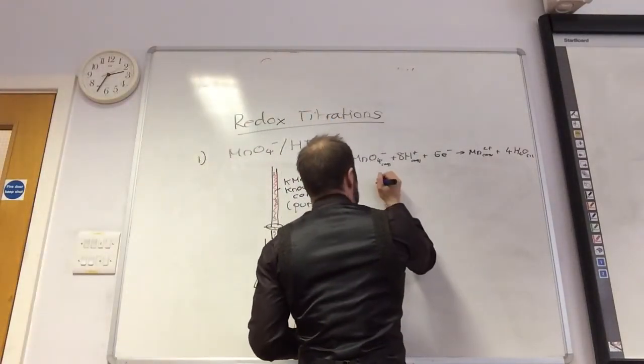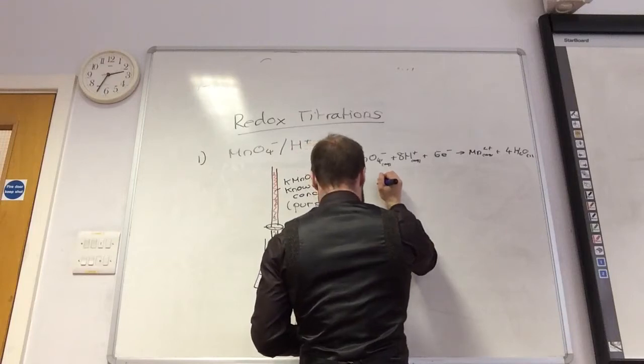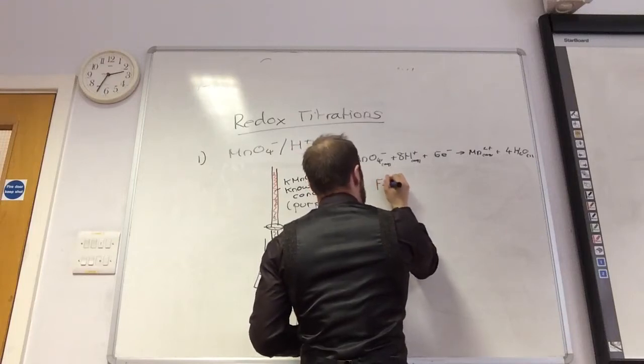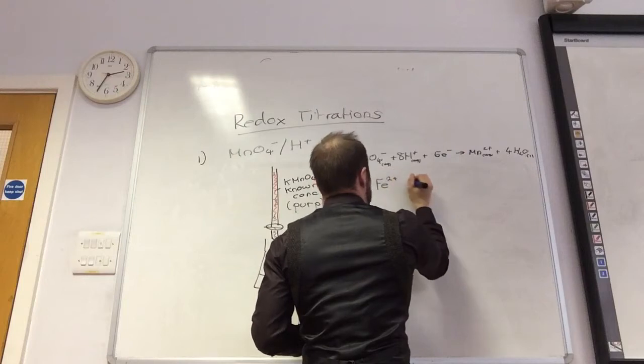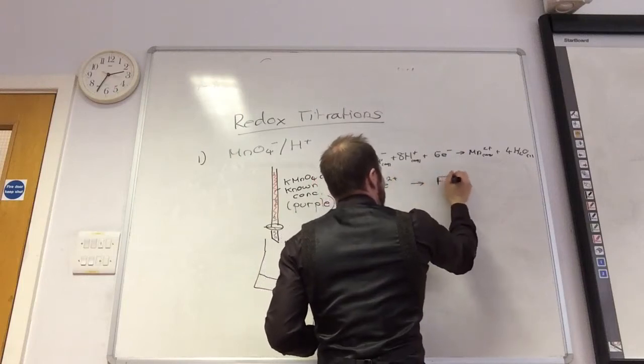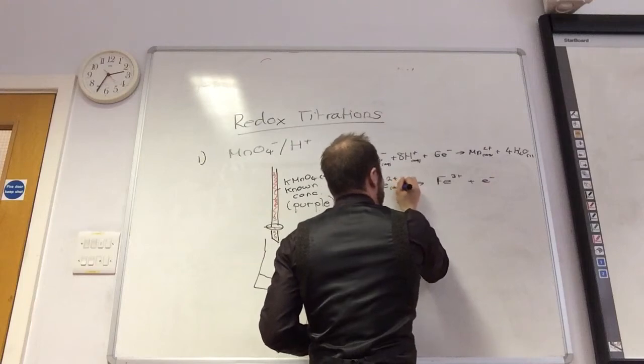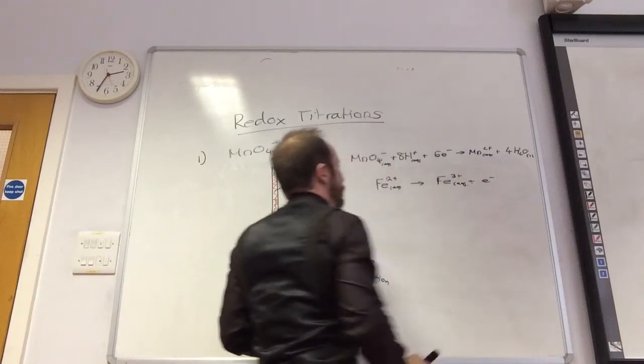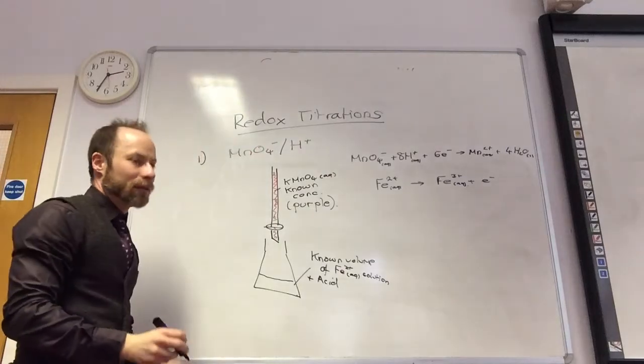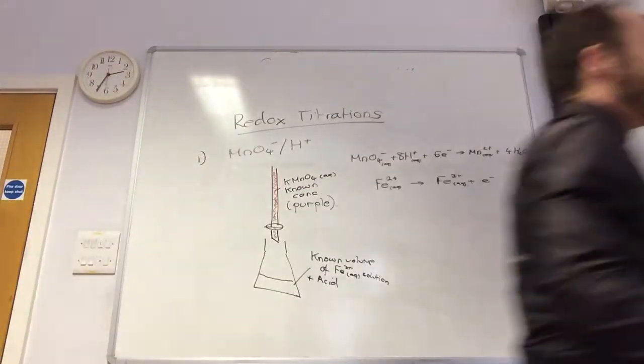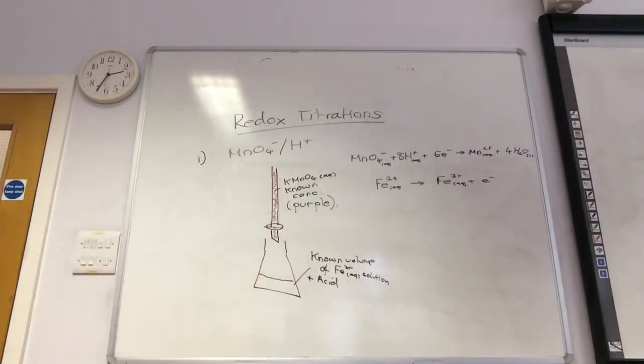The half equation for Fe2 plus is Fe2 plus going to Fe3 plus plus an electron.